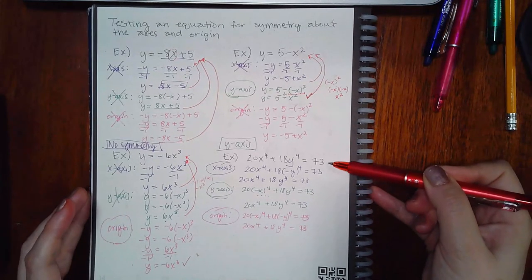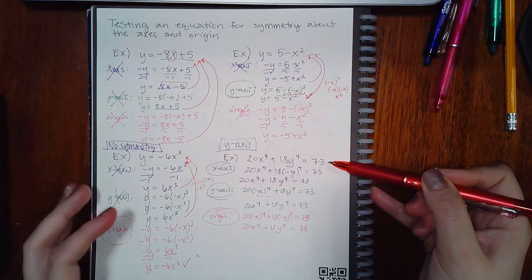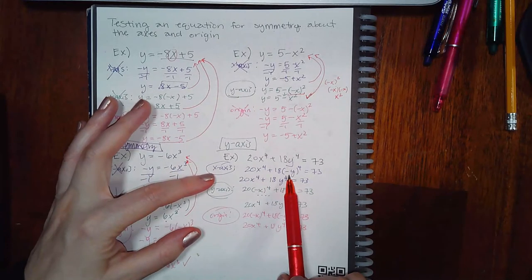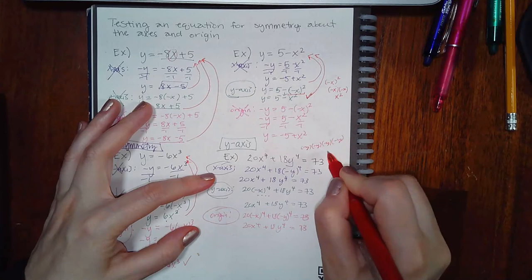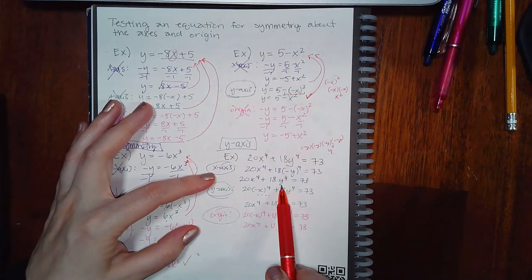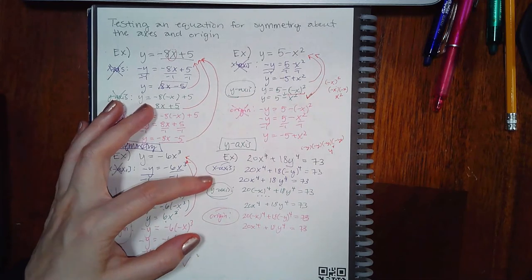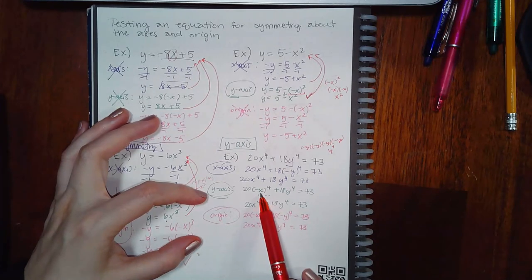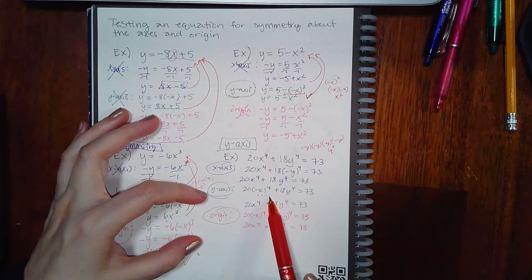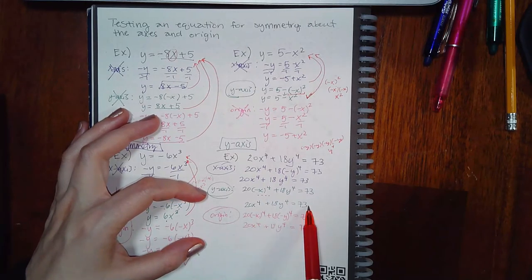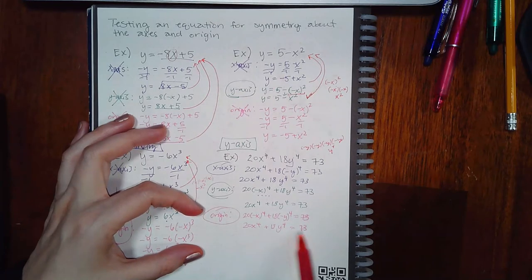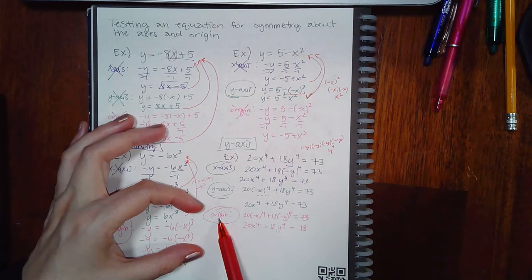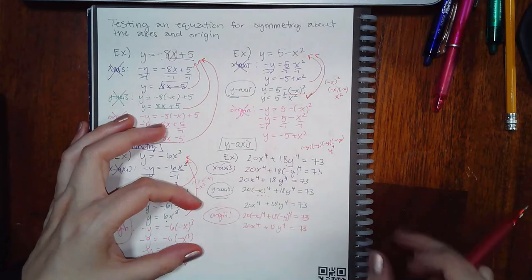For 20x⁴ + 18y⁴ = 73: plugging in negative y — negative y to the fourth power equals positive y to the fourth — so the equation equals the original, giving x-axis symmetry. Plugging in negative x — negative x to the fourth equals positive x to the fourth — equals the original, giving y-axis symmetry. Plugging in both negative x and negative y simultaneously: both become positive to the fourth power, matching the original. So this equation has all three symmetries: x-axis, y-axis, and origin.